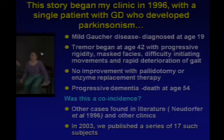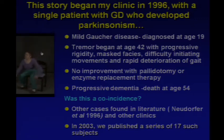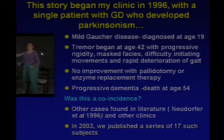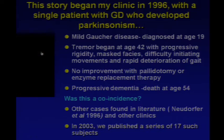This is an old video from when we first started — you can appreciate her masked facies, rigidity, difficulty initiating movements, and rapid tremor. We followed her for another five or six years; she developed progressive dementia and died at age 54. We first thought this could be a coincidence — having a rare disorder doesn't make you immune from having another more common disorder. But when I went through the literature and talked to colleagues around the world, it seemed that all the Gaucher centers seemed to have more cases of Parkinson than you would have imagined, so we started to collect those cases.